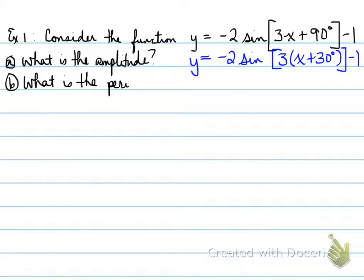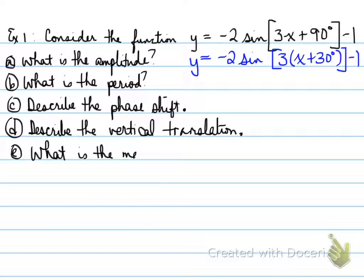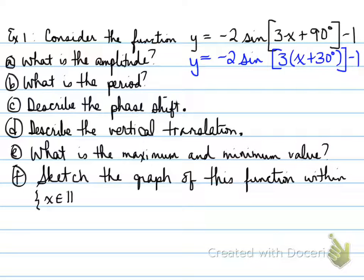You're asked to do the following: What is the amplitude? What is the period? Describe the phase shift. Describe the vertical translation. What is the maximum and minimum value? And sketch the graph of this function within the following domain. The amplitude is the A value without the sign. That means the amplitude is two.